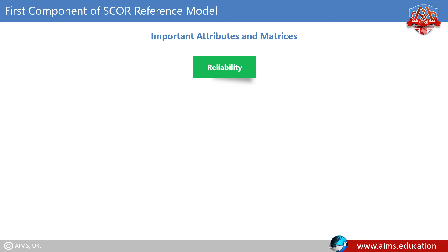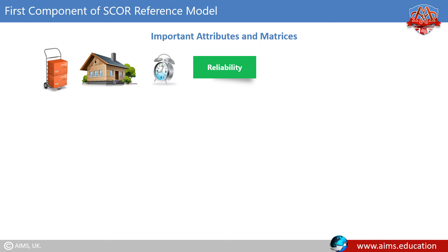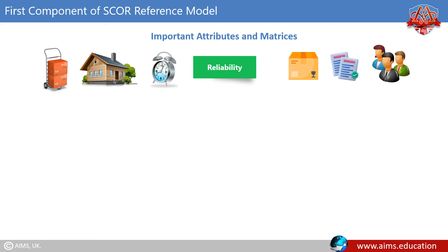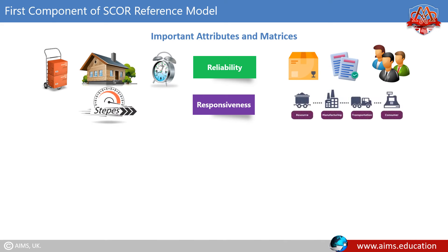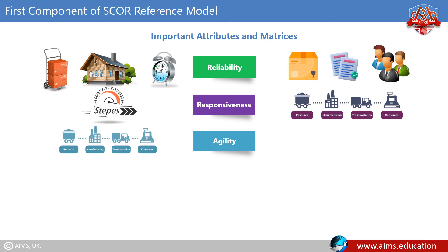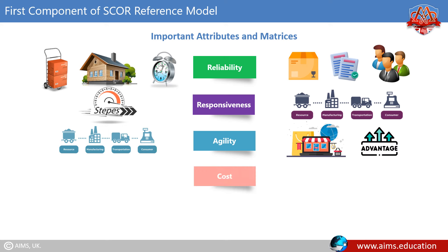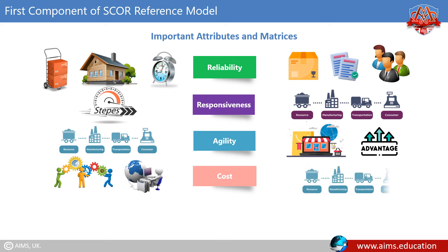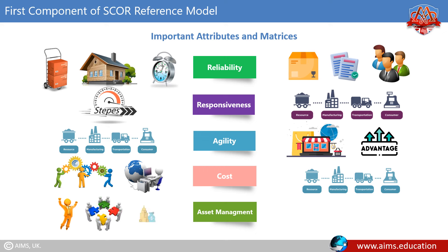Reliability shows the performance of the supply chain in delivering the correct product to the correct place, at the correct time, in the correct condition and packaging, in the correct quantity, with the correct documentation, to the correct customer. Responsiveness is the speed at which a supply chain provides products to the customer. Agility is the supply chain's ability to respond to marketplace changes to gain or maintain competitive advantage. Cost is associated with managing and operating the supply chain. Asset management is the effectiveness of an organization in managing all fixed assets and working capital to support demand satisfaction.